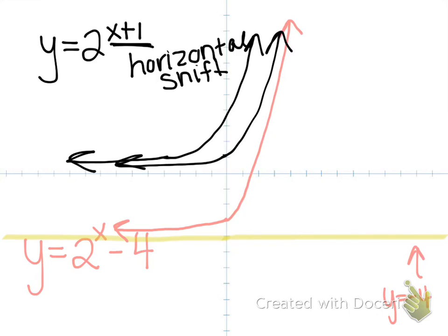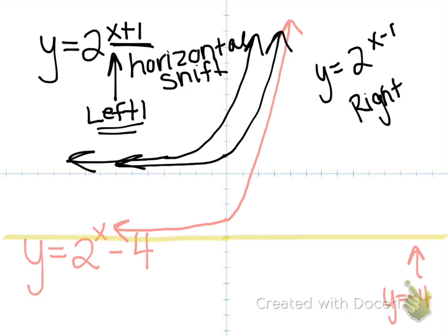Only vertical shifts affect our asymptotes. The only other thing to mention about horizontal shifts is, if it says x plus 1 like this one here, we're really going left 1. And if I said y equals 2 to the x minus 1, this would mean we would be going right 1, because the horizontal shifts are always opposite of what the equation says.